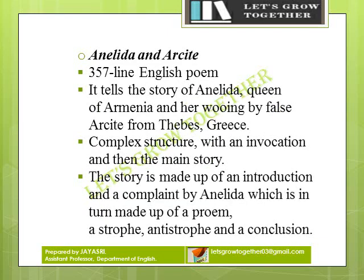Anelida and Arcite is a 357-line English poem. It tells the story of Anelida, queen of Armenia, and her wooing by the false Arcite from Thebes, Greece. It has a complex structure, with an invocation and then the main story. The story is made up of an introduction and a complaint by Anelida, which is in turn made up of a proem, a strophe, an antistrophe, and a conclusion.